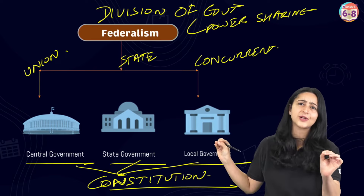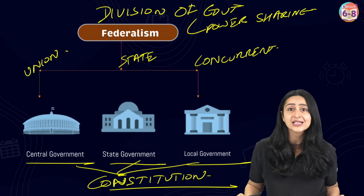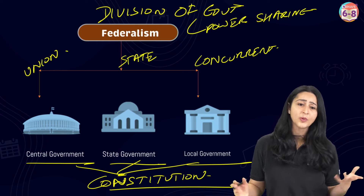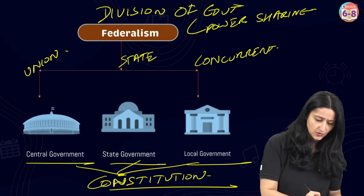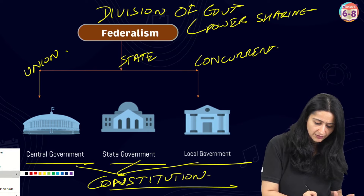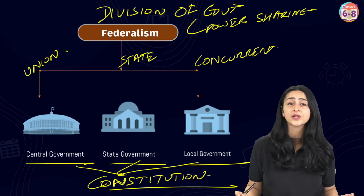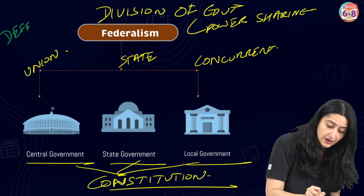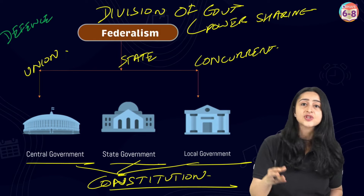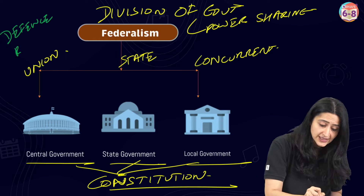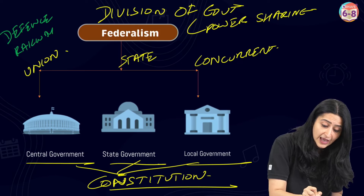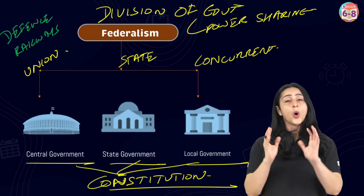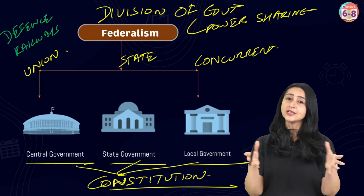The union list consists of 97 subjects of national importance — matters like defense, railways, and post and telegraph, which concern the entire nation. The state list consists of 66 subjects of local interest under the jurisdiction of the state — things like public health and police, which fall under that particular state's jurisdiction.